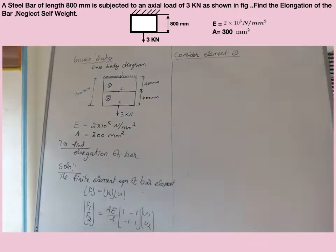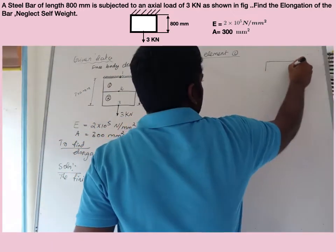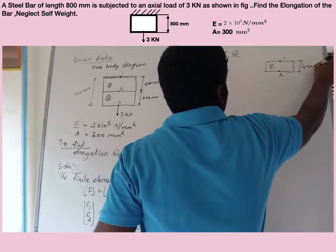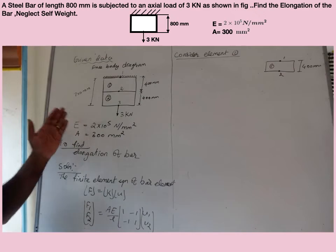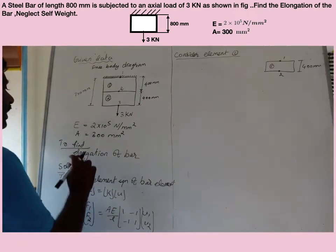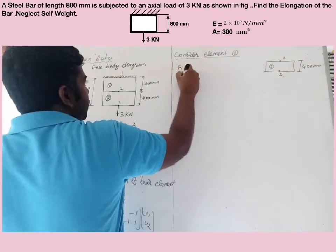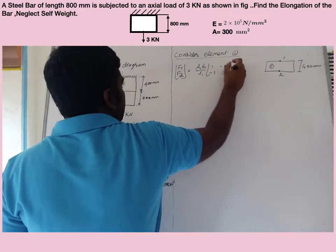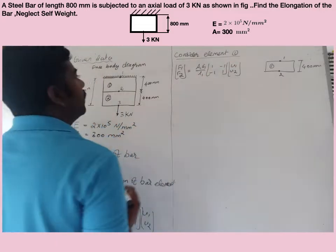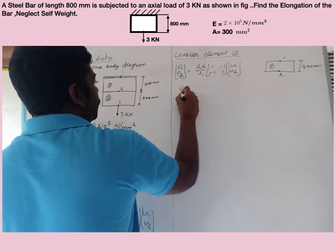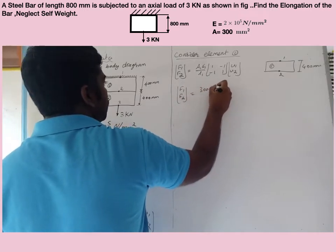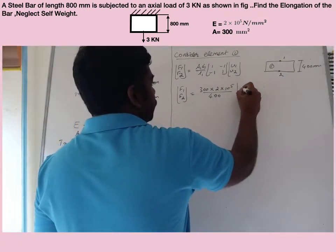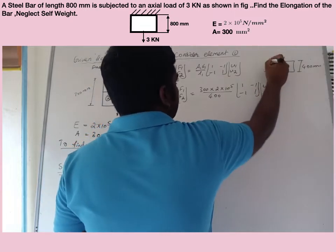Consider element 1. Element 1 has two nodes — node 1 and node 2. The length of element 1 is 400 mm. The area and Young's modulus for both elements are the same: E equal to 2 into 10 raised to 5 Newton per mm square and A equal to 300 mm square. Therefore, the finite element equation for element 1 is: F1, F2 equal to (300 into 2 into 10 raised to 5) divided by 400, times [1, -1; -1, 1], times [U1; U2]. Note that node 1 is fixed.